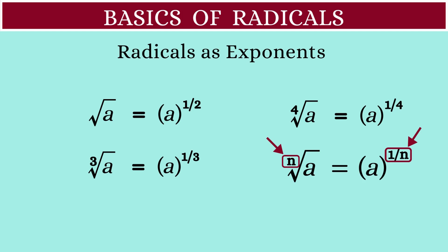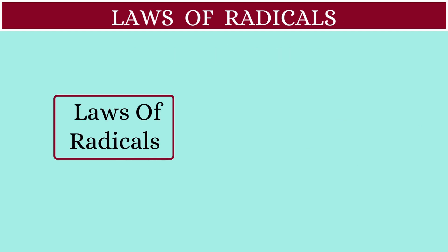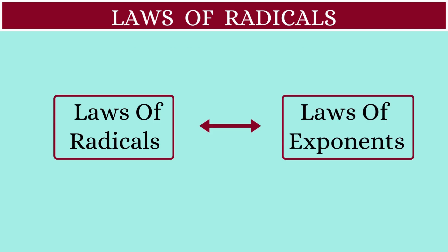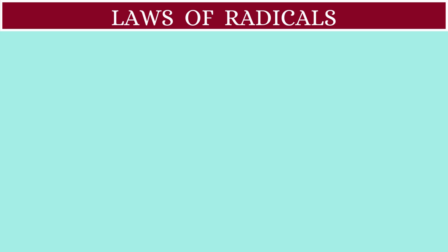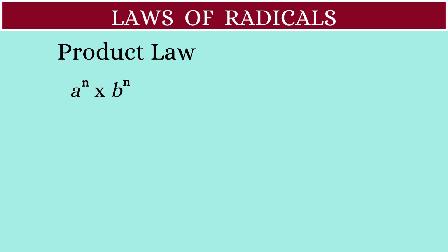Just like we have laws of exponents, we also have the laws of radicals, which can be seen as an extension of the exponent laws. Let's get started with the first law of radicals, which is the product law. We know that in exponents, a to the power of n multiplied by b to the power of n is equal to a times b, the whole raised to n.